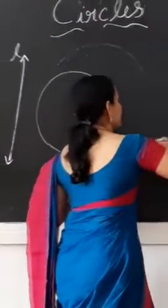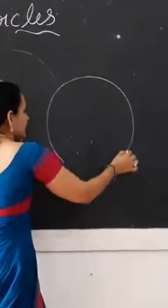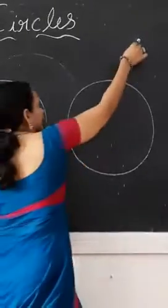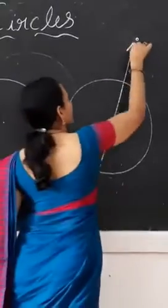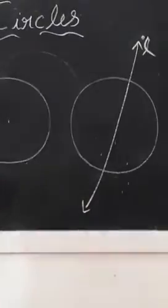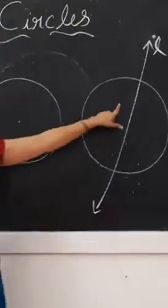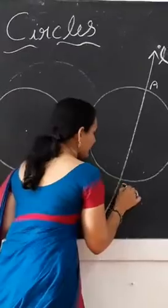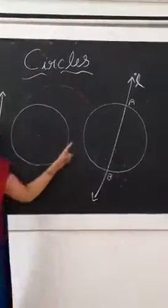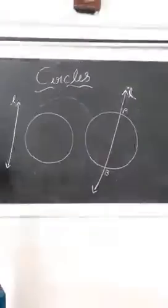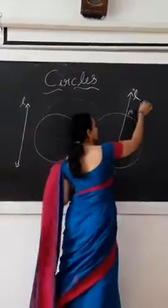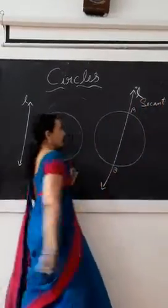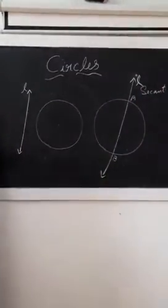In the second case, if we draw a circle and a line, the line touches the circle at two distinct points, let them be A and B. Here the line L is called a secant.